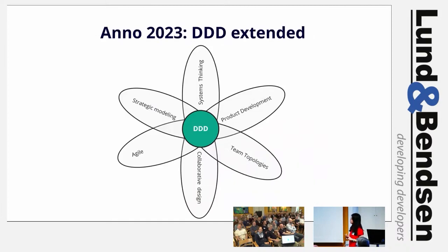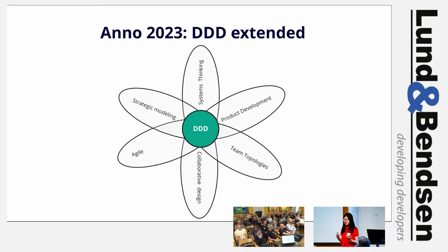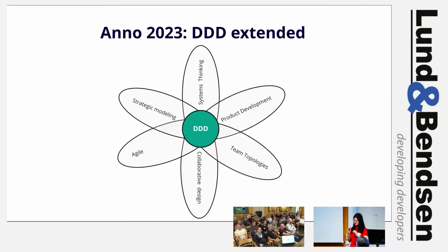Twenty years after DDD was born, it has been cross-pollinated by many other thinking tools and design approaches. The most prominent ones are systems thinking, product development, team topologies, collaborative design, agile, and strategic modeling such as Wardley mapping. This is a natural development explained by Ashby's Law of Requisite Variety — the first law of cybernetics — which says that in order to deal properly with the diversity of problems the world throws at us, our repertoire of responses needs to be at least as nuanced as the problems we are facing. DDD has got to evolve to avoid being a monoculture.